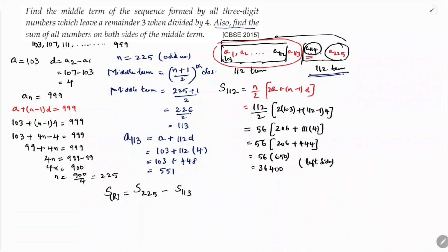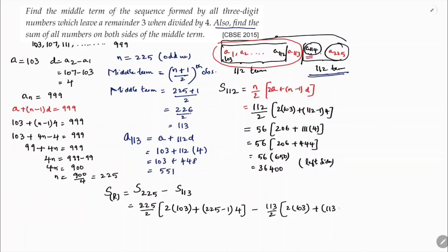Minus S₁₁₃ = 113/2 × [2×103 + (113−1)×4]. Simplifying S₂₂₅: 225/2 × [206 + 224×4] = 225/2 × [206 + 896].